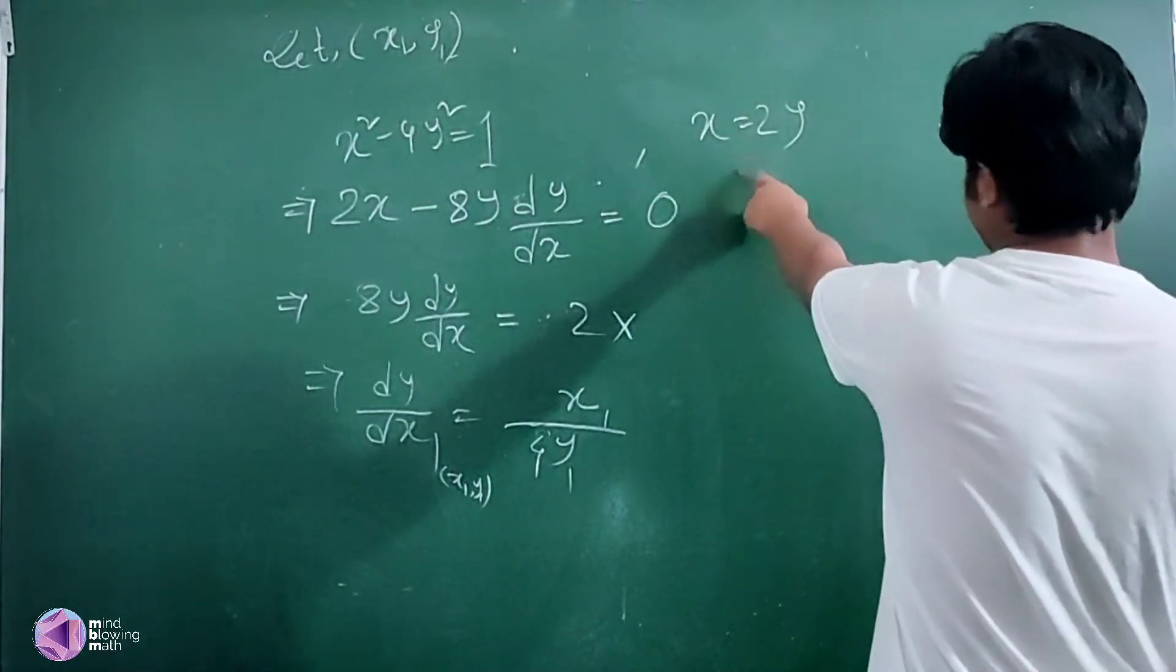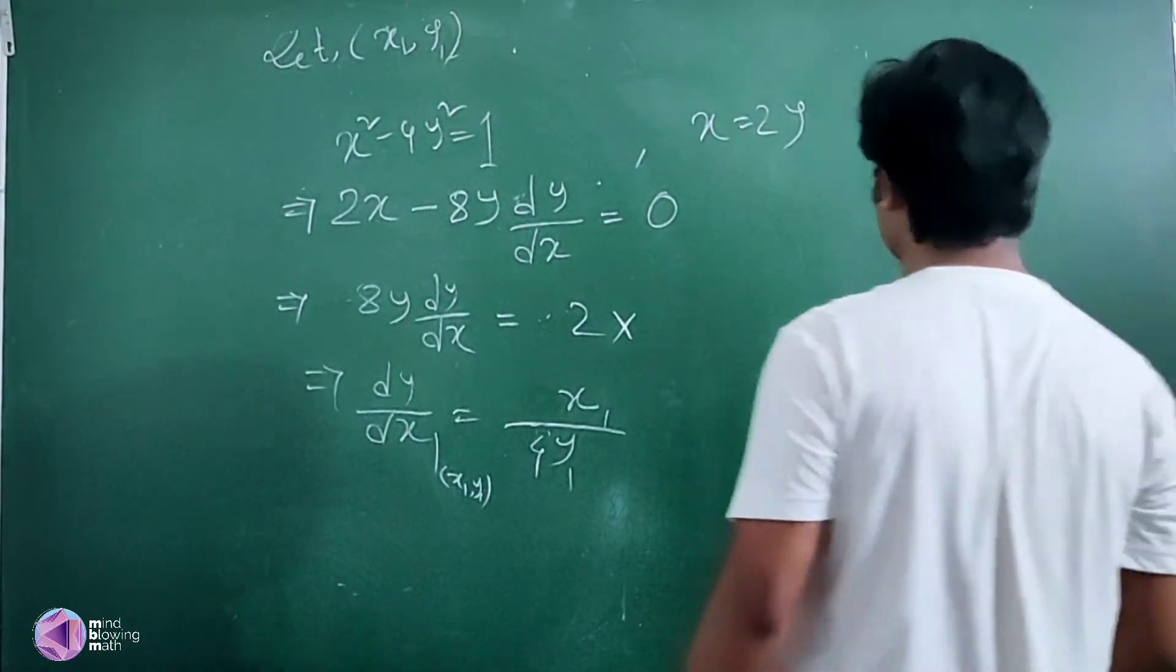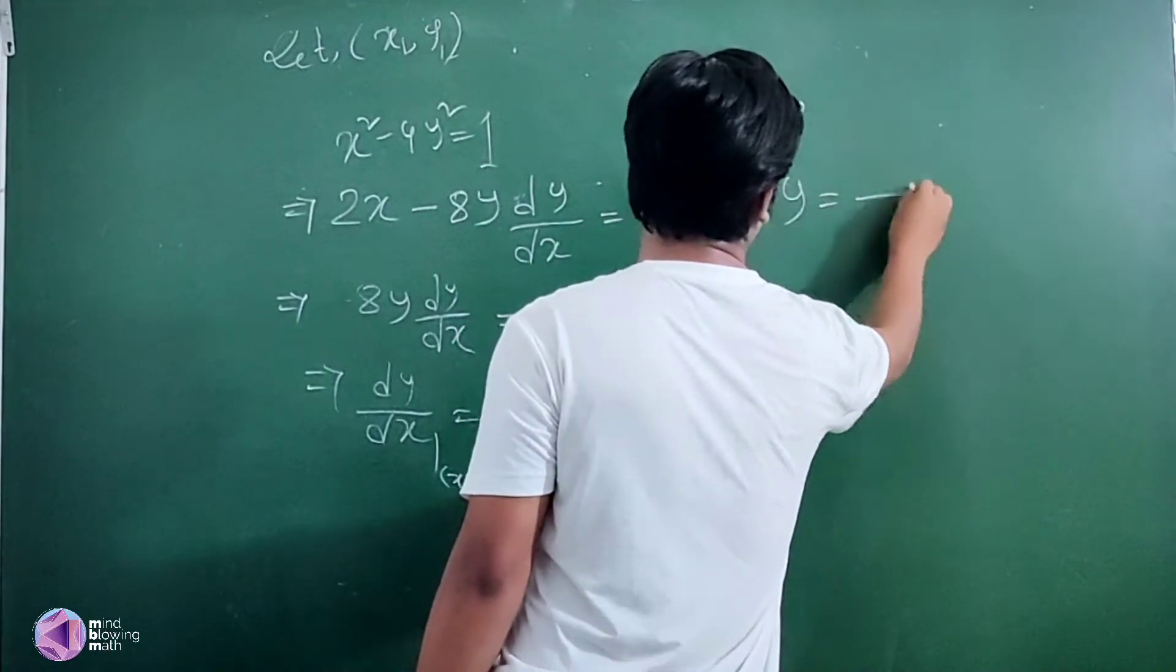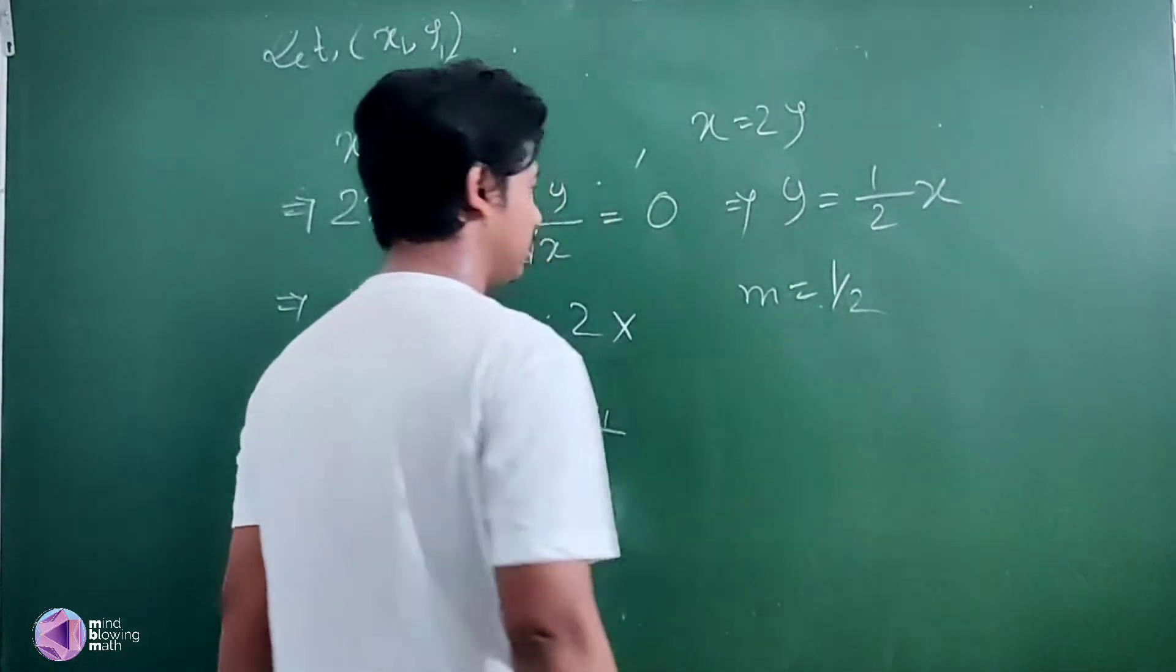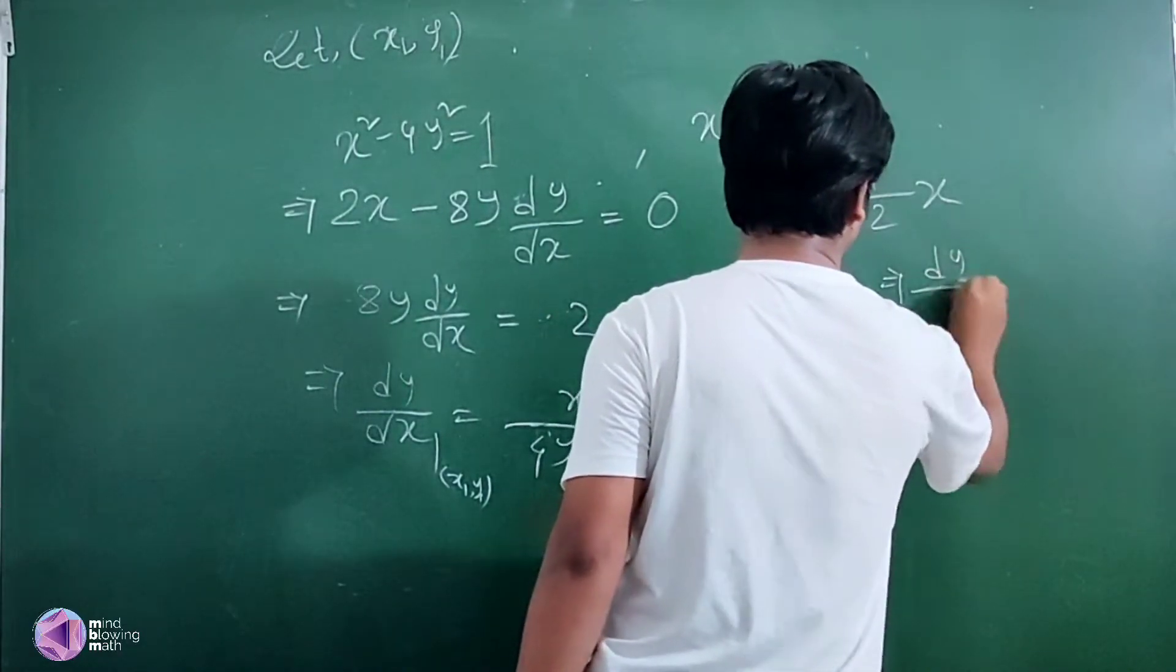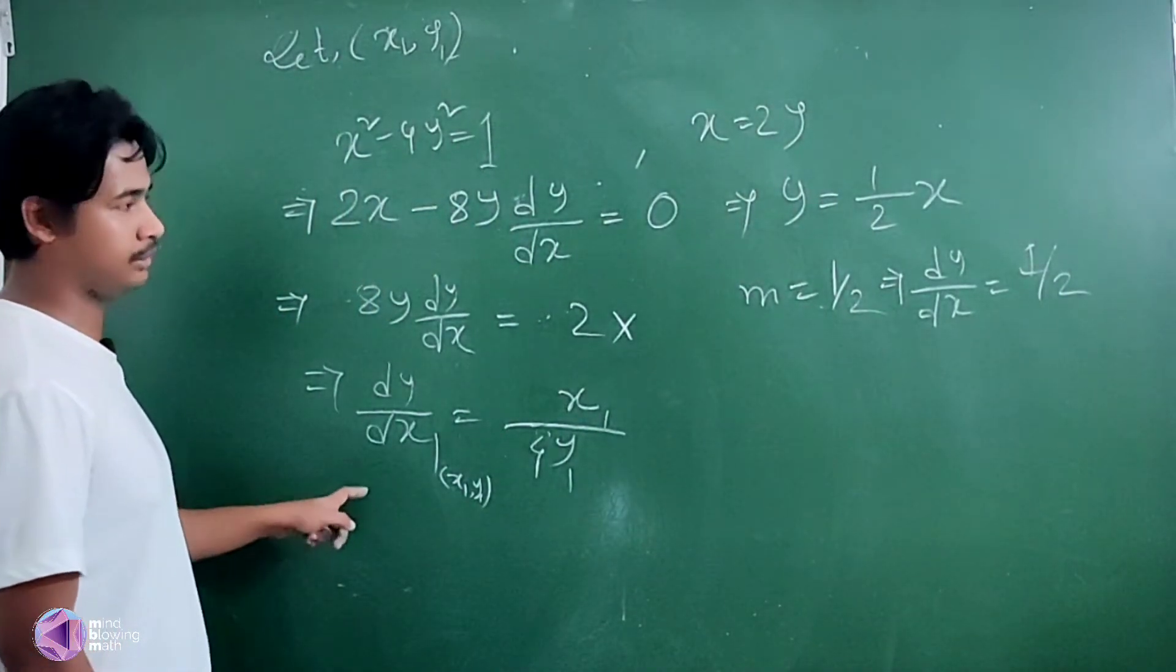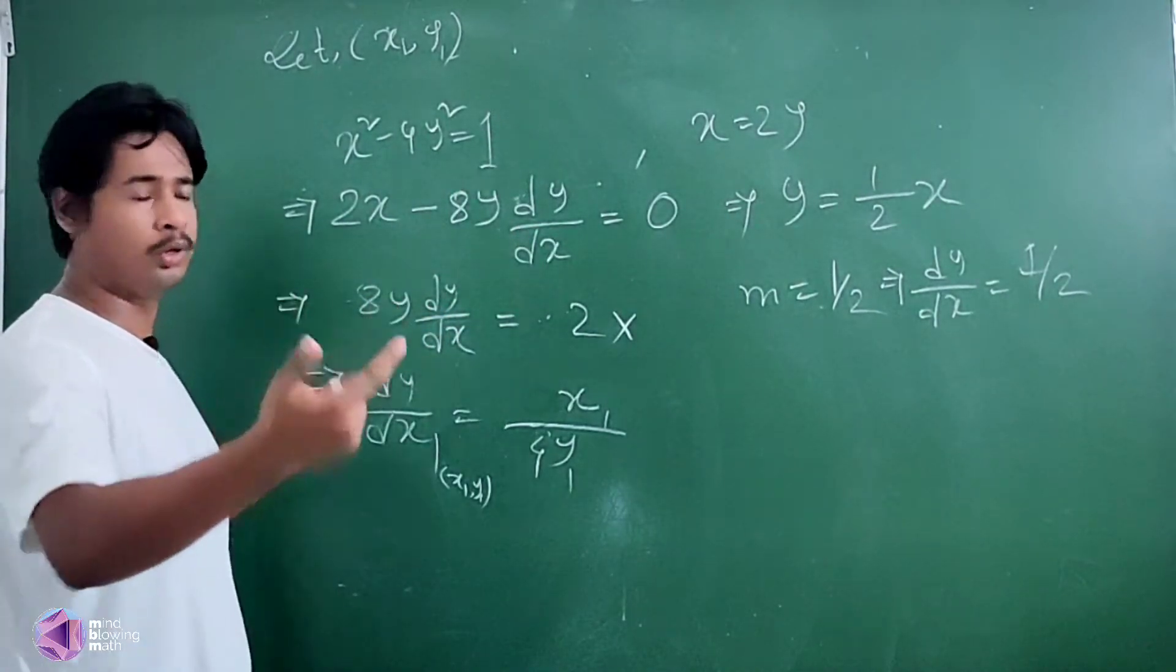Now, I have to find the line slope. The line y equal to 1/2 x, so here the slope is half. Then slope is nothing but dy/dx. dy/dx is equal to half. The parallel line has the same slope.